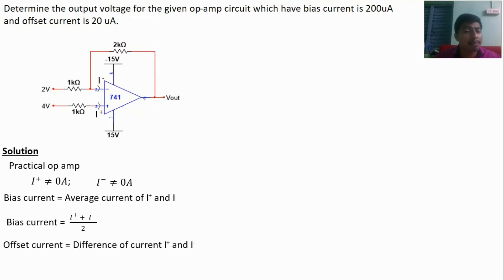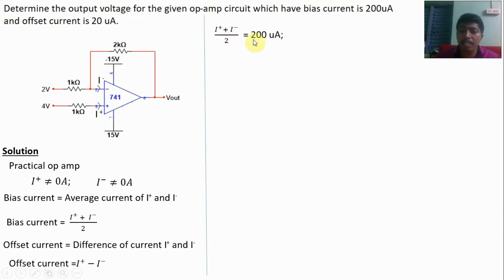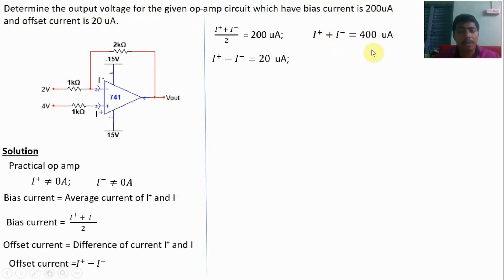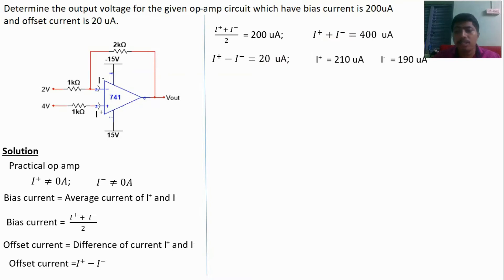Bias current is given: (I plus + I minus) / 2 = 200 micro ampere, so I plus + I minus = 400 micro ampere. Offset current is given: I plus − I minus = 20 micro ampere. Solving these two equations, we get I plus = 210 micro ampere and I minus = 190 micro ampere.